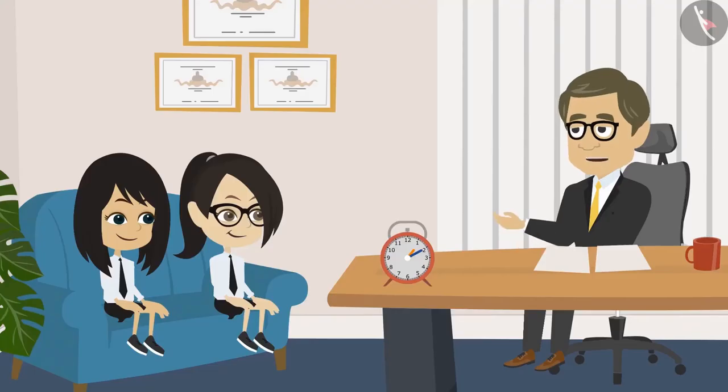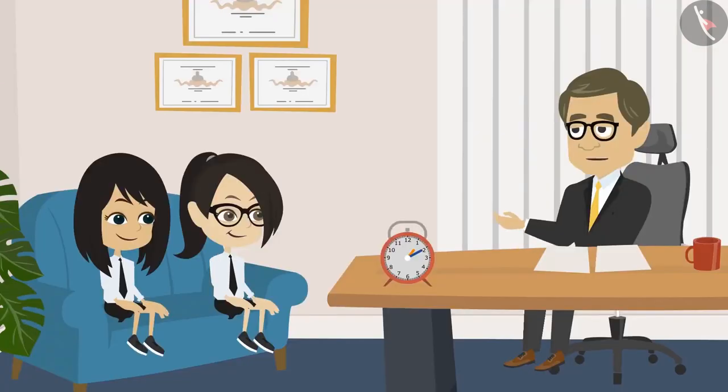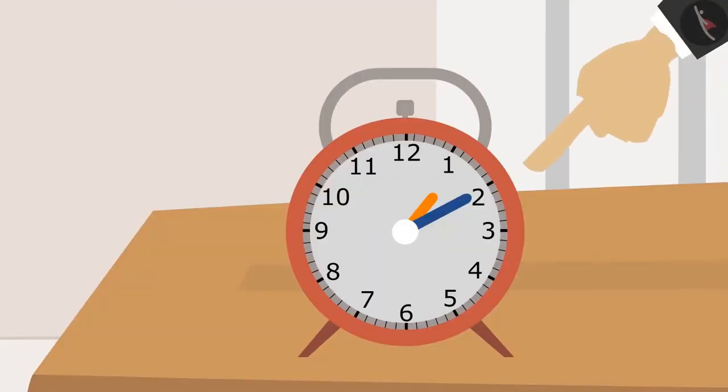You have learned to read the hour and minute hands separately and now you can read the clock. What does that mean, sir? That means you can look at the clock and tell the time. Look at this clock. A clock has two hands. A small hand is an hour hand. The big one is the minute hand.